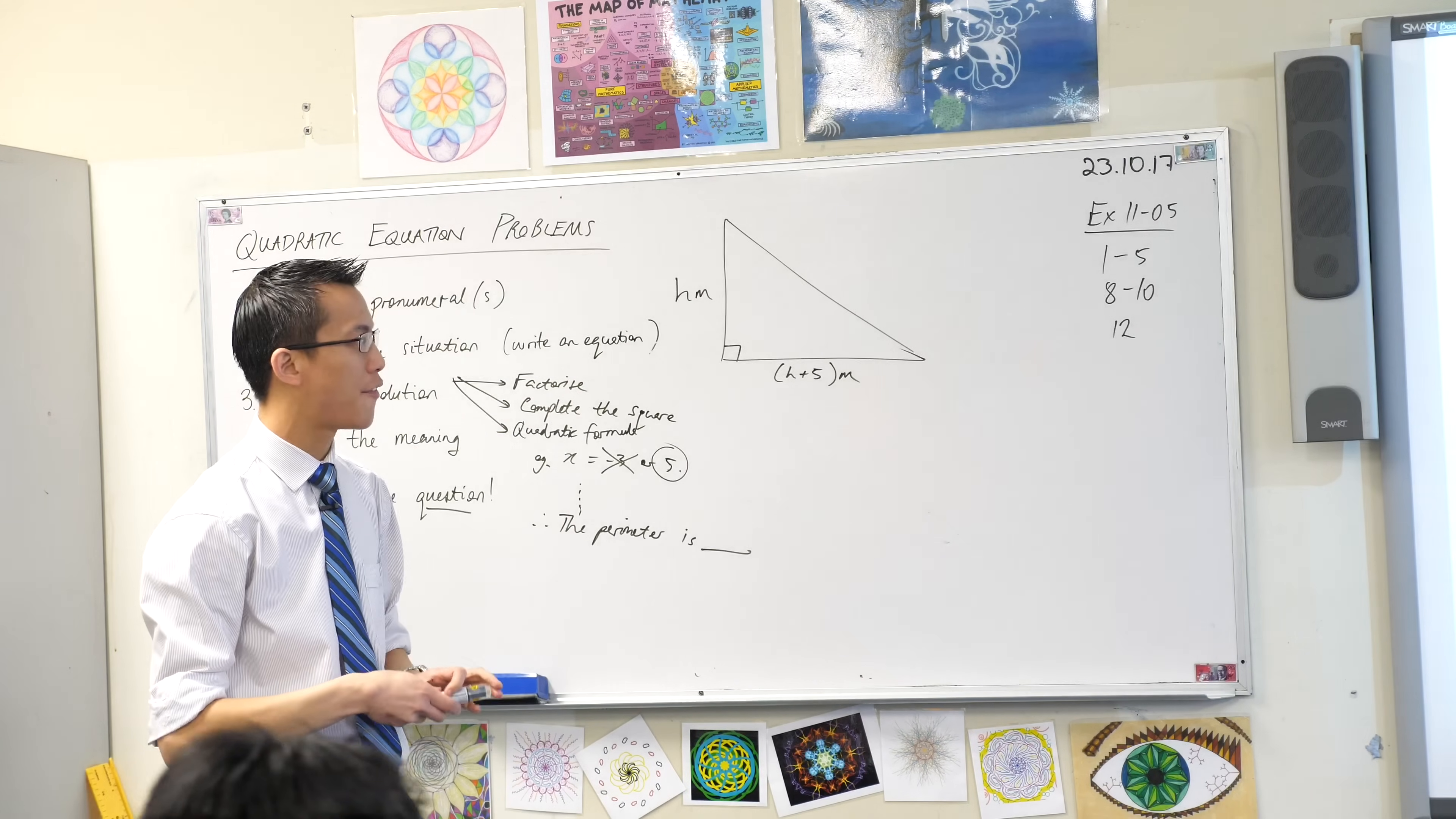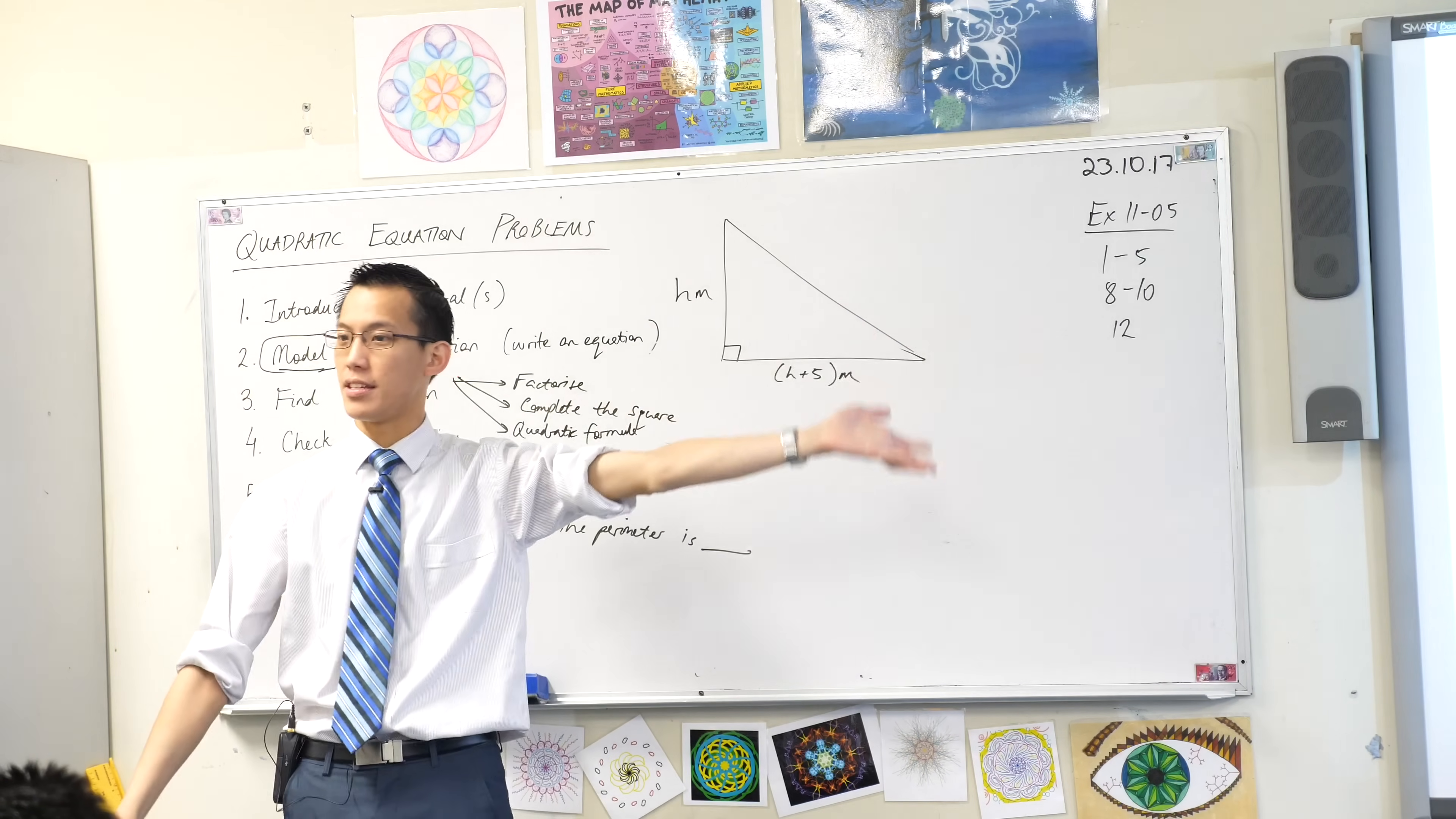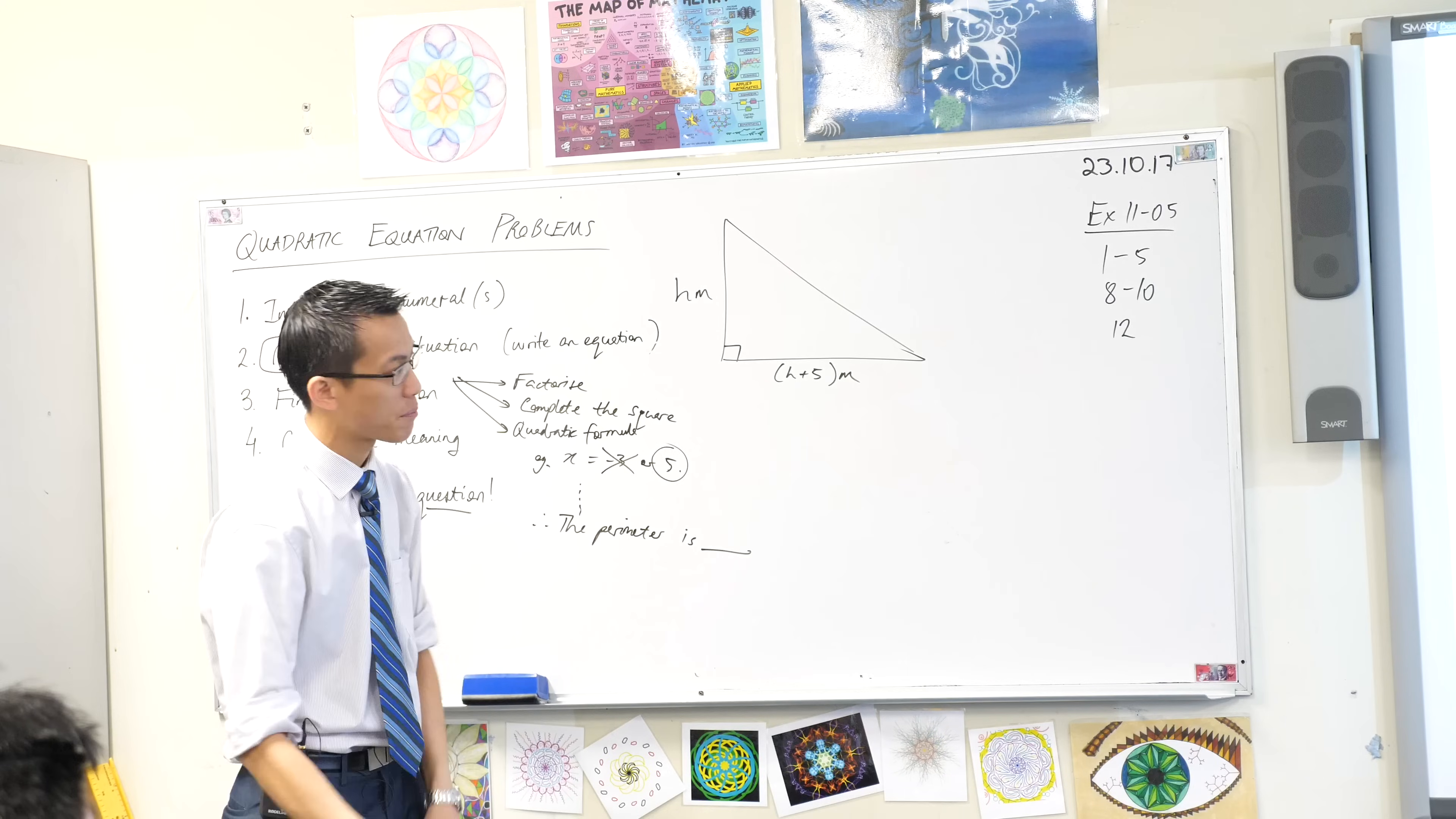Its base is five meters longer than its perpendicular height. Now please note, you could have got h and h plus 5 just from that sentence, right? But they've tried to give you a bit of an extra nudge by putting it on the diagram. If the area of the park is 700 square meters, find the dimensions. Okay, let's do it.